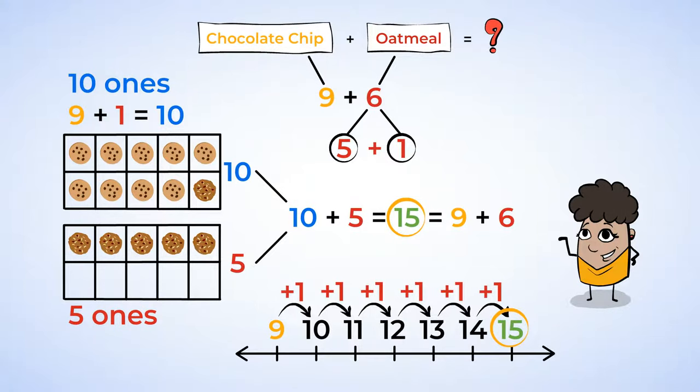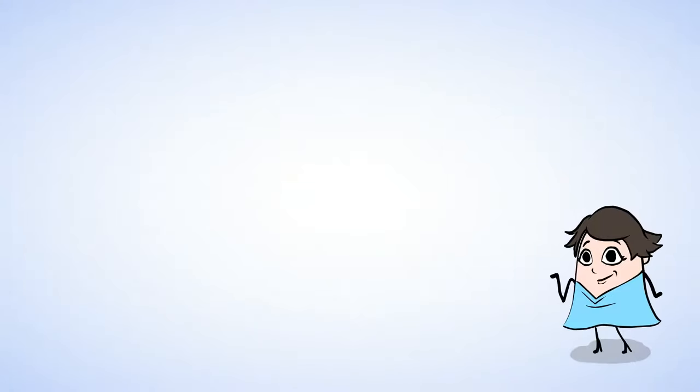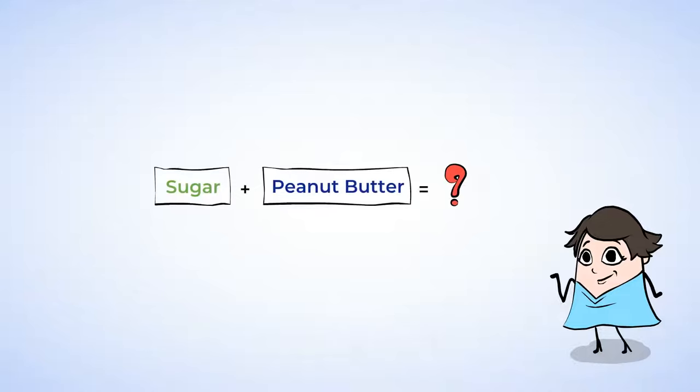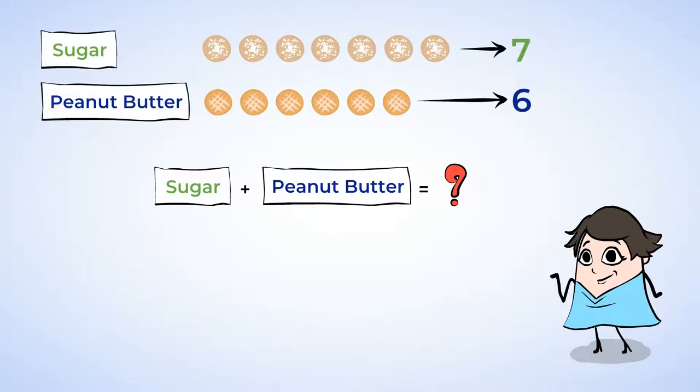Let's try out a few more problems. Your next task is to calculate how many people like sugar cookies and peanut butter cookies the best. Check the answers. 7 people like sugar cookies and 6 people like peanut butter cookies.